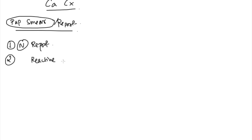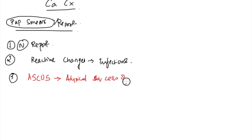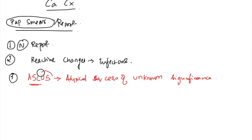The second possible outcome is reactive changes, which are suggestive of infections. The third outcome is a special term called ASCUS - Atypical Squamous Cells of Unknown Significance. These are atypical cells that are not normal, and you need to investigate further to find out why they are present.